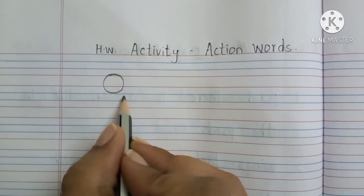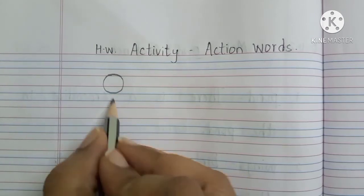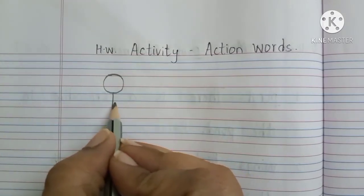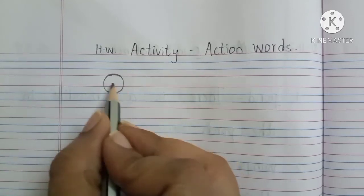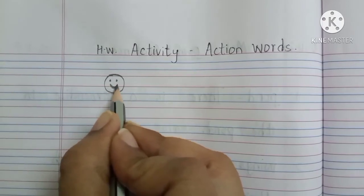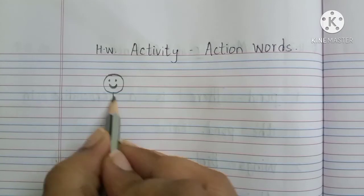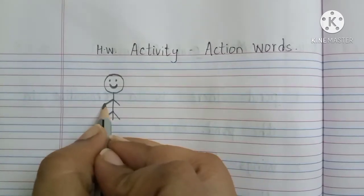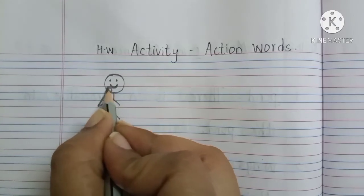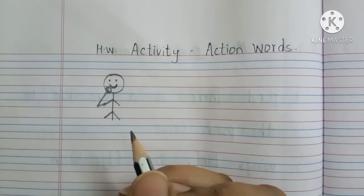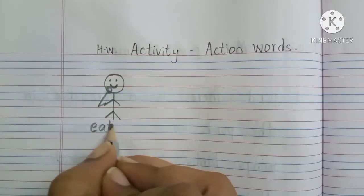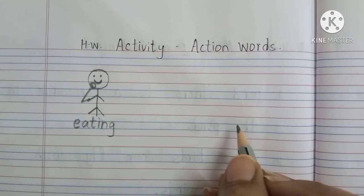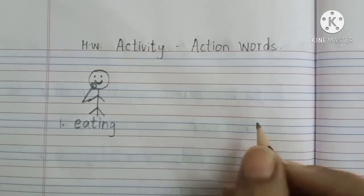You are going to draw by yourself, children. Your parents will not help you with this — it's fun doing it. These are called stick pictures. In this you will be drawing their hands and legs. In this picture he is eating something. So we will be writing E-A-T-I-N-G, eating. I am going to show only two; the rest you will be doing more. This is one — eating. First one is eating.